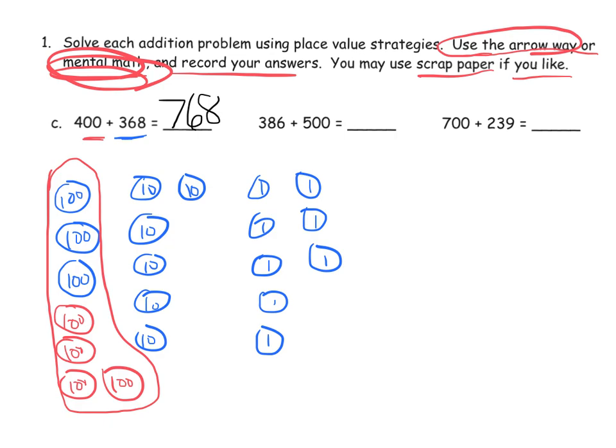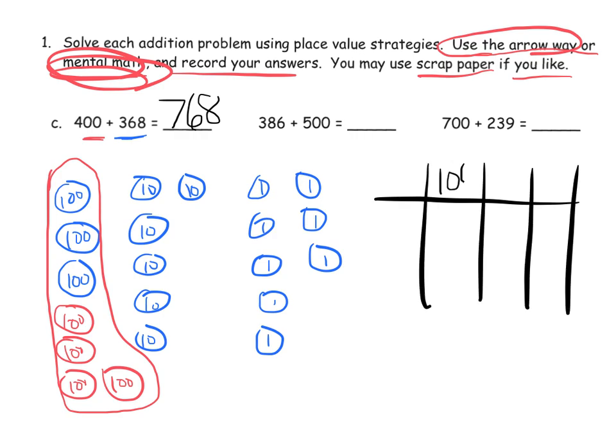Other students might prefer a little place value chart like this. So here's our 100s, our 10s, and our 1s. And they may model it 300, 60, 8. Would then be 1, 2, 3, 4, 5, 6, 7, 8. And then add 400, which is 1, 2, 3, 4. So there's another way to do it. In which case, you'd have 7 in the 100s, 6 in the 10s, 8 in the 1s.